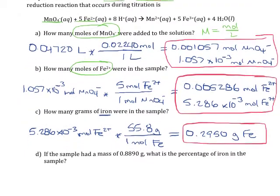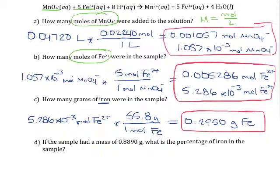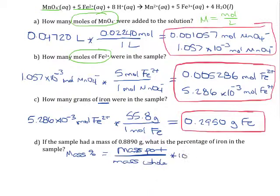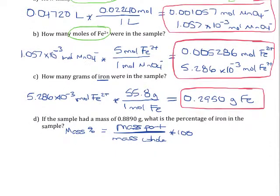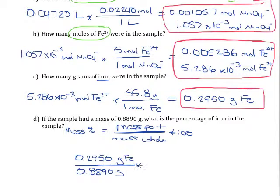The last thing they want us to do is the percent composition. We know that the whole sample had a mass of 0.8890 grams and they want to know what percent of iron was in the sample. This is very much like a mass percent. Remember that mass percent is equal to the mass of the part that we care about over the mass of the whole thing times 100 because it's a percentage. So we've got 0.2950 grams of iron over 0.8890 grams, multiply that by 100, and we end up with 33.18% iron in that sample.